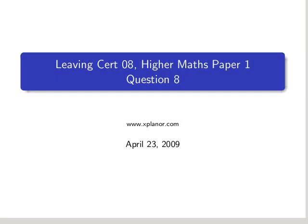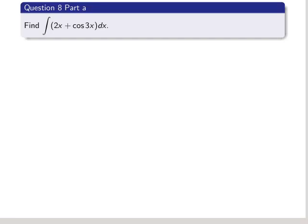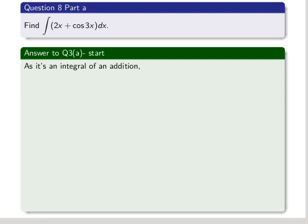Welcome to the last question in Paper 1, Higher Maths, Leaving Cert 2008, which is question 8. Part a: find the integral of 2x plus cos 3x in terms of x. As it's an integral of an addition, we can integrate each term and then add them together.